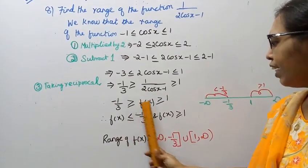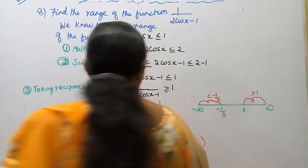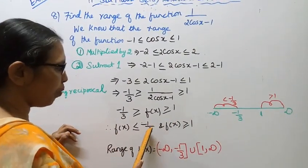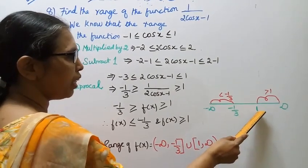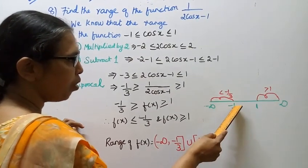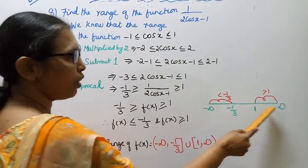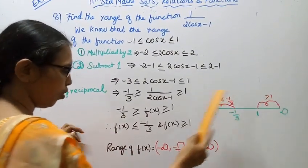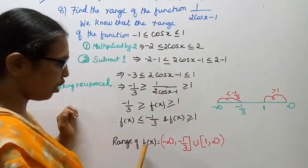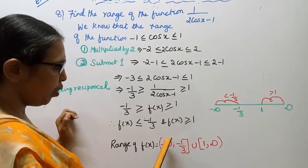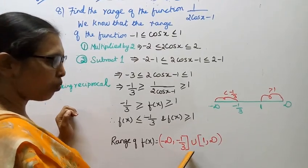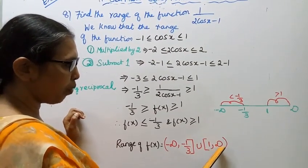So, f(x) ≥ 1 or f(x) ≤ -1/3. This means f(x) ranges from minus infinity up to -1/3, and from 1 to infinity. The range of f(x) is (-∞, -1/3] union [1, ∞). Open interval at minus infinity, closed bracket at -1/3, union closed bracket at 1, open interval to infinity.